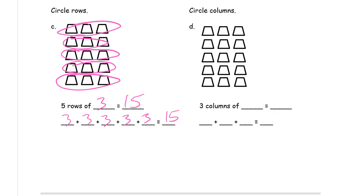And now we're circling columns. You'll notice it's the exact same array. But now we're looking at the columns. Three columns of five in each column. Three columns of five is 15. Since we're counting three columns of five, we have three fives. 5 + 5 + 5 = 15.